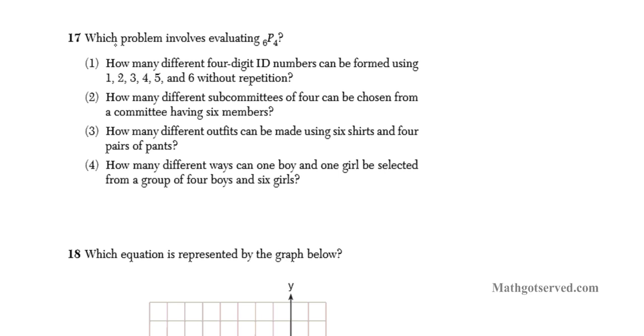Let's take a look at question 17. It says which problem involves evaluating 6P4? We know P is for permutation. And then when you are doing permutation, what you think about is you are placing or you are ordering. Order is important for permutation.